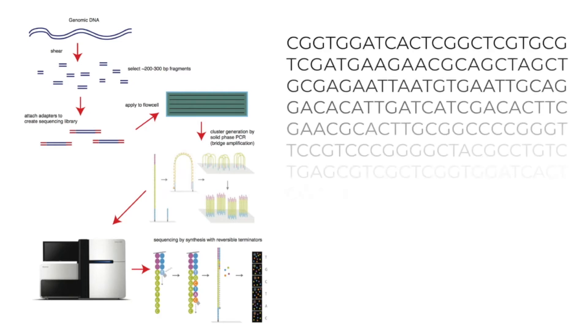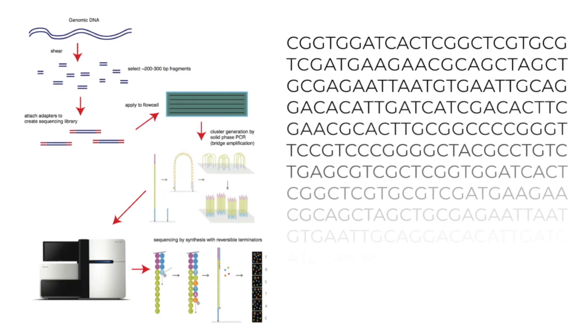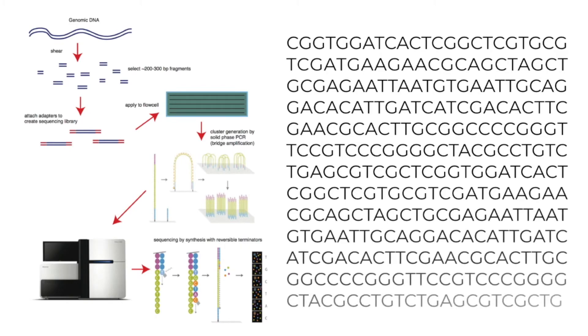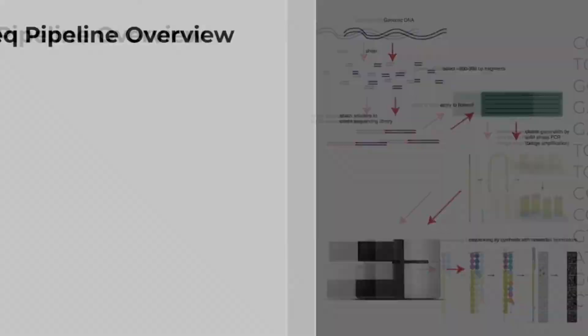Typically, NGS reads are between 30 and 300 base pairs long. They consist of a series of letters T, C, G, and A.